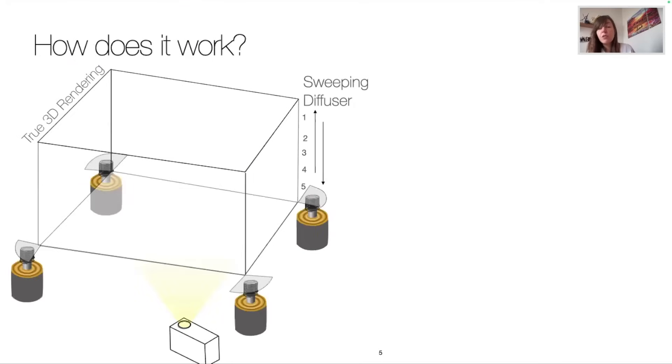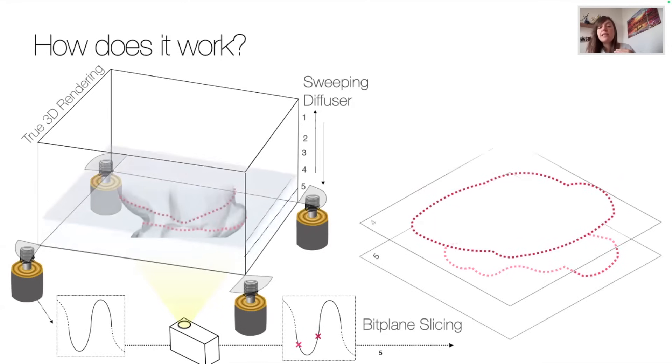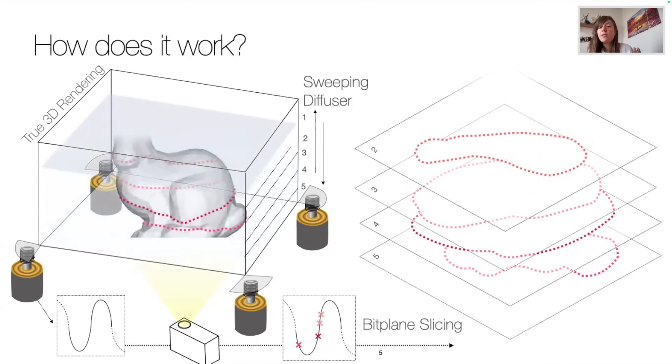But how does it work? Well actually the actuators follow a sinusoid which is synchronized with the projector slicing the 3D object into bit planes. So each slice appears along the sinusoid and represents a cut section of the 3D object. Altogether, they render the full object.